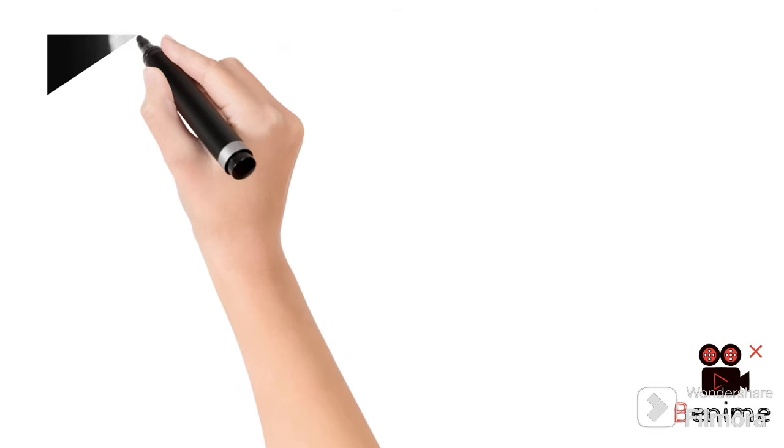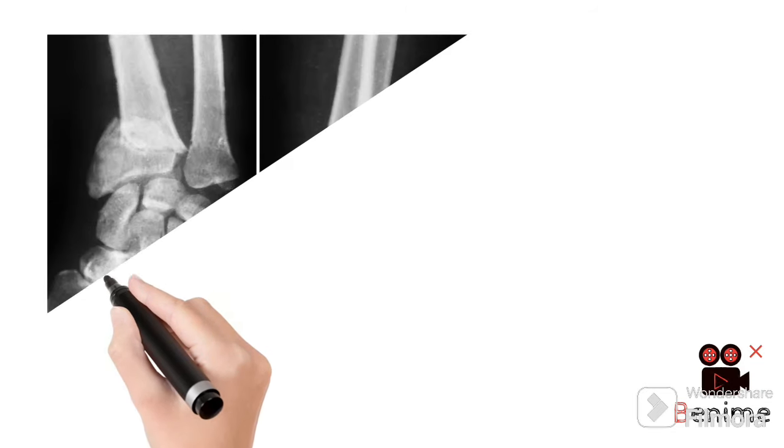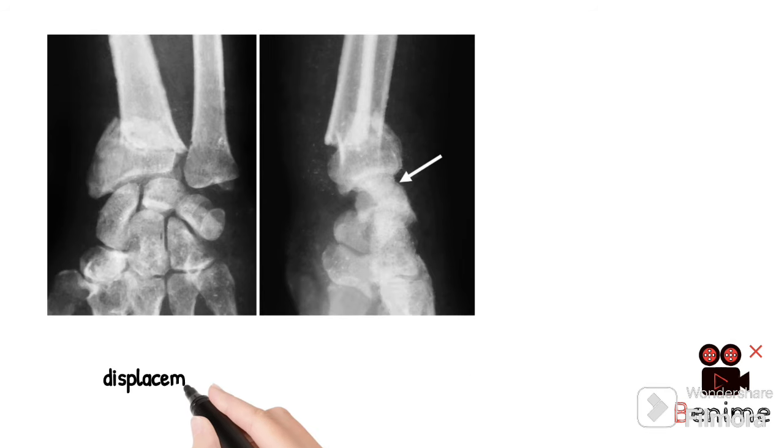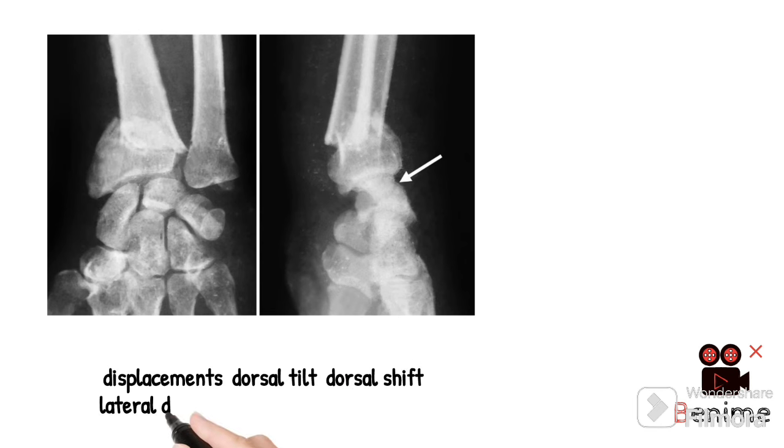On extra findings, it can be seen as displacements which are likely dorsal tilt, dorsal shift, lateral tilt, lateral displacements, and supination.